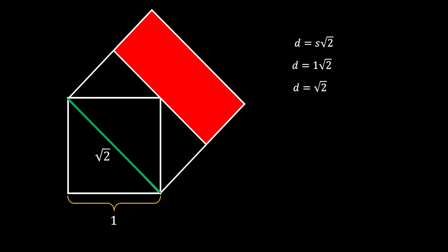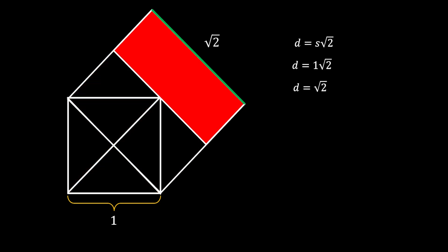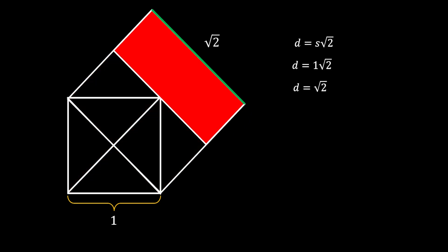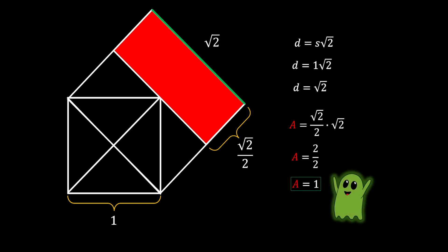Sliding that diagonal up shows it as one side of our red rectangle. Pulling the second diagonal of the smaller square reveals all these isosceles right triangles that are completely identical. Since all these triangles are identical, the other side of our red rectangle equals half the side of the bigger square, which is √2 over 2. The area of the rectangle equals (√2/2) times √2, which equals 2 over 2, so the area equals 1 square unit. This is our solution.